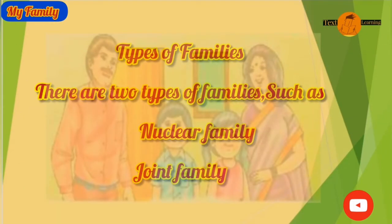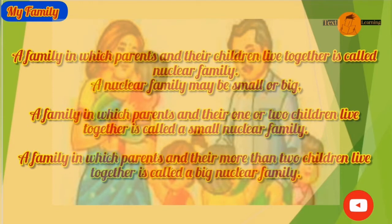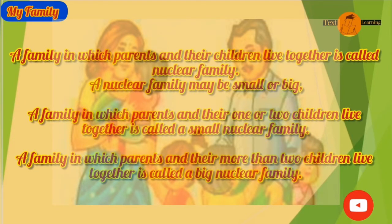Types of families: There are two types of families, such as nuclear family and joint family. A family in which parents and their children live together is called a nuclear family. A nuclear family may be small or big.